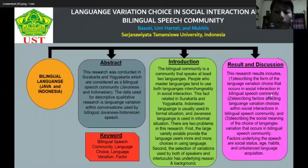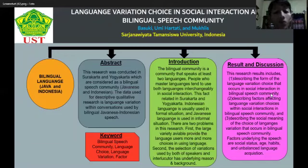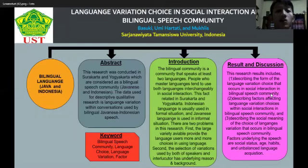The factors underlying speech choices are social status, age, habits, and unbalanced language acquisition. Regarding social status: social status is often a consideration to determine the chosen language variation. This means that by looking at the social status of the speaker relative to ourselves, we choose the appropriate speech variety.